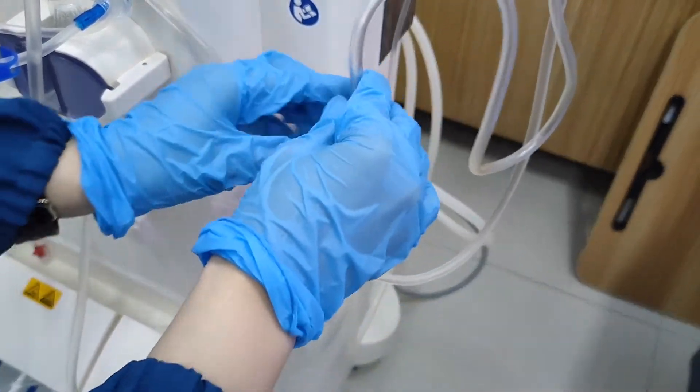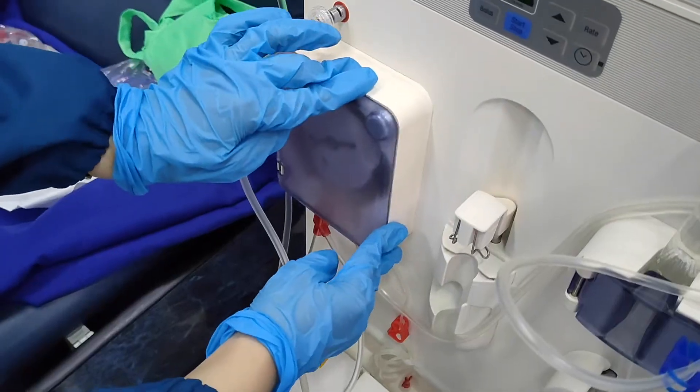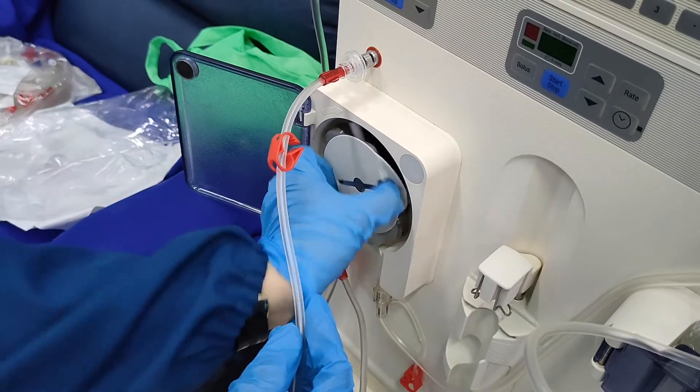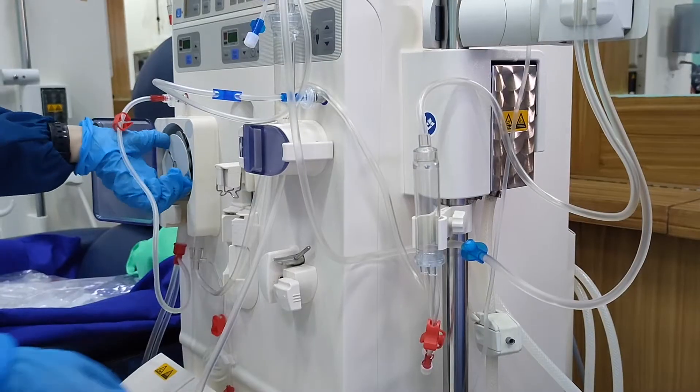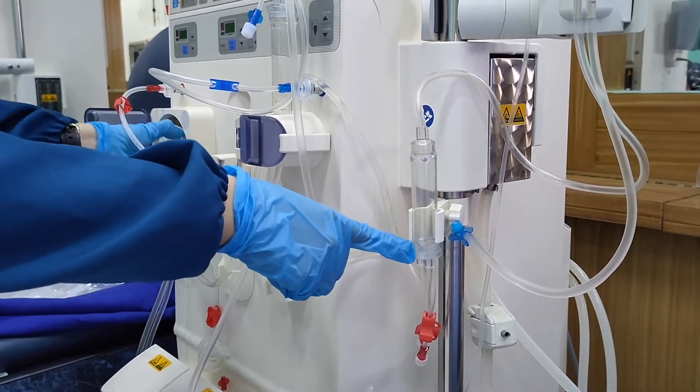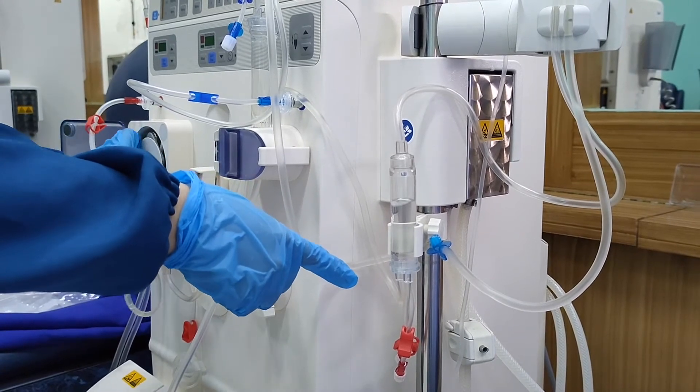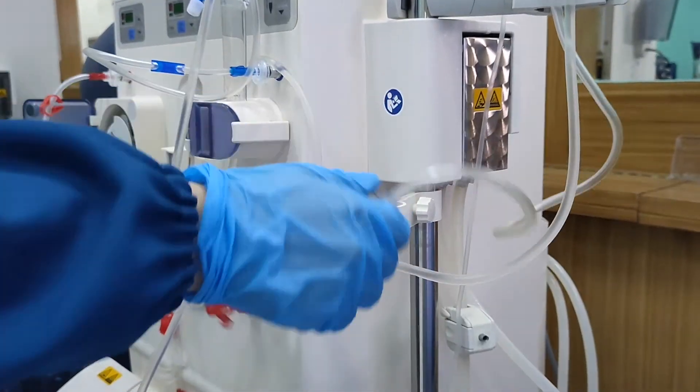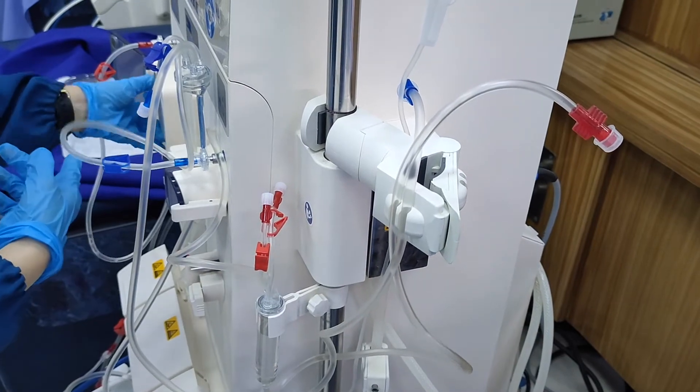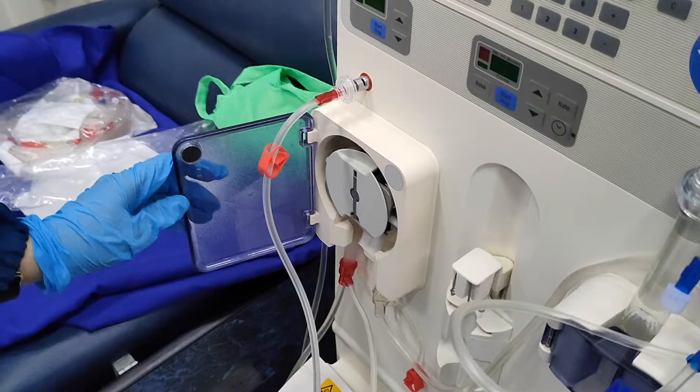Next, invert the arterial chamber. Then, manually turn the blood pump until the arterial chamber is three-fourths full. After the arterial chamber is three-fourths full, place the arterial chamber upright. Then, continue to manually turn the blood pump until the dialyzer port is filled with NSS.